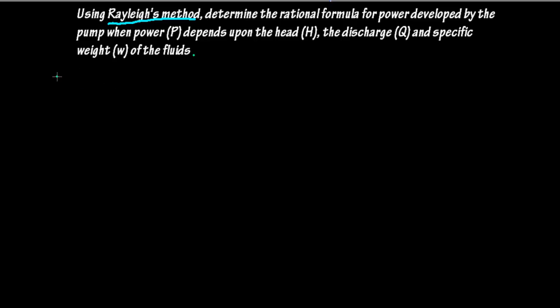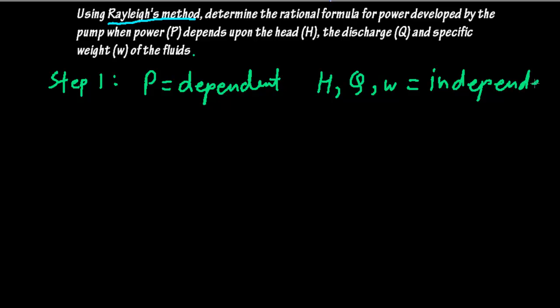I am getting started with this method from now onwards. The very first step is to determine the dependent variable. The quantity for which you have to determine the equation is called the dependent variable. Here, power P is the dependent quantity, and H, Q, and W are independent quantities.